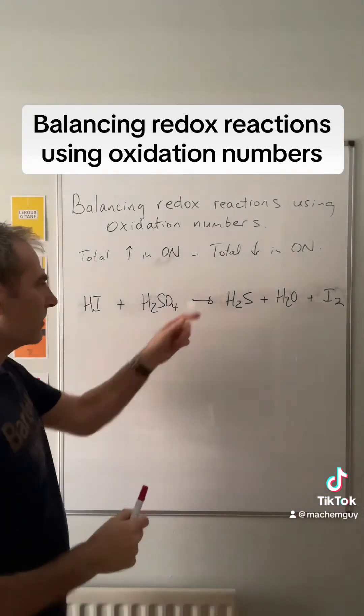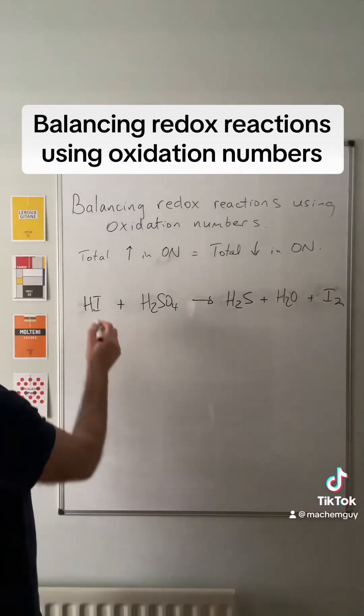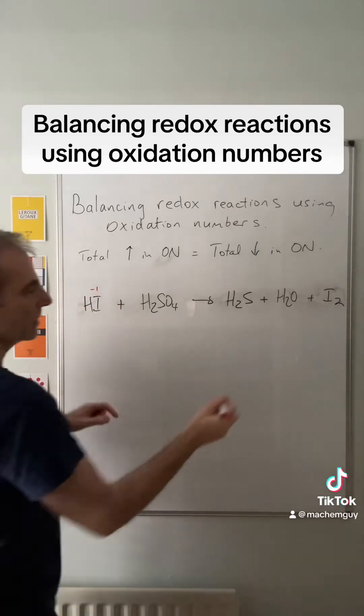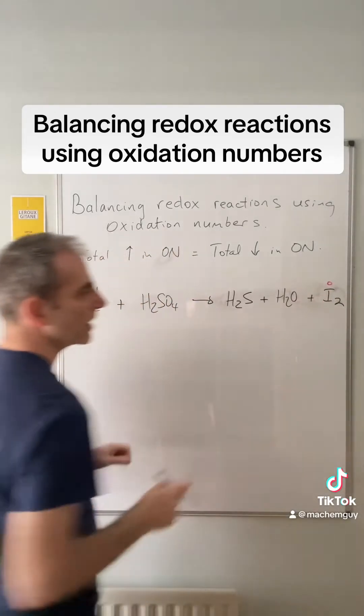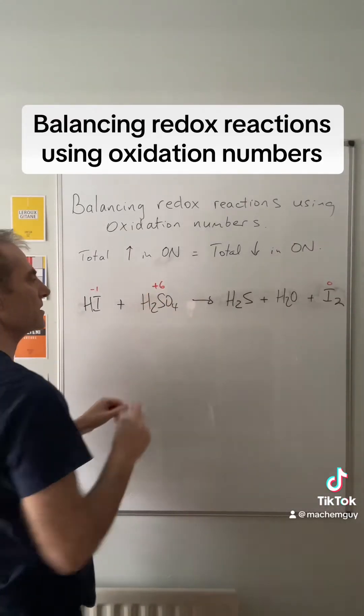There's the next one. Sorry, my board's scruffy—anyway, hopefully you can see everything okay. So iodine starting out minus one and it's going to zero as the element, so there's a change of one.